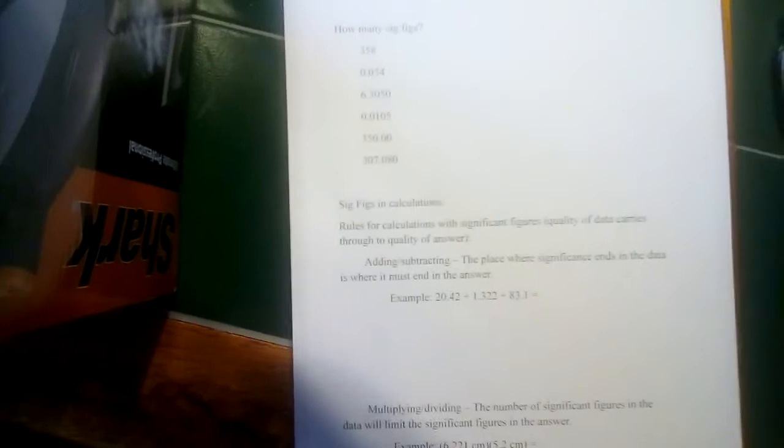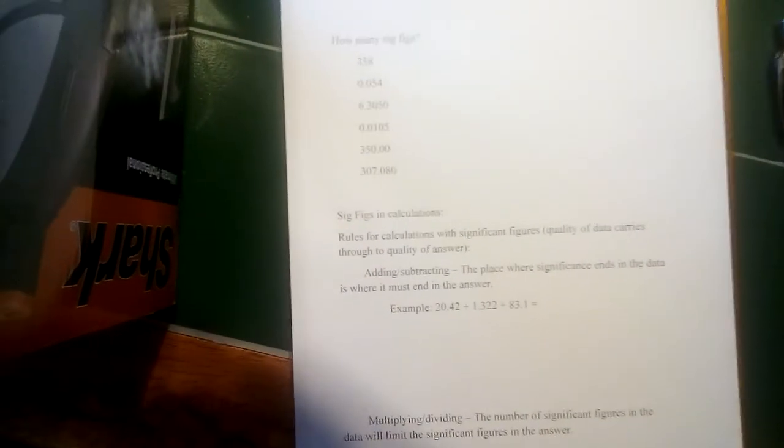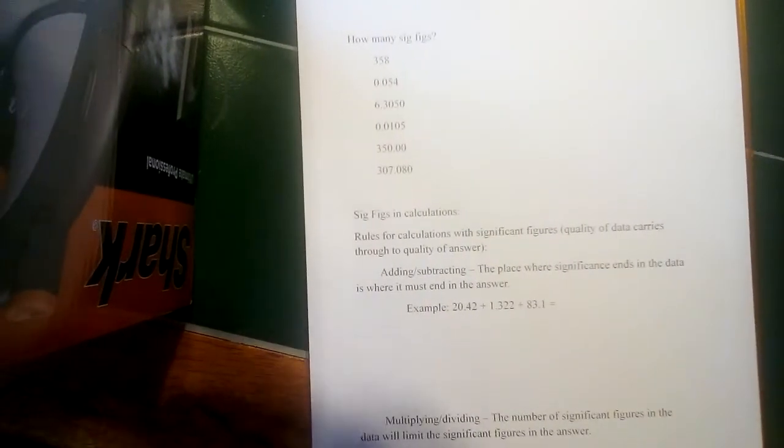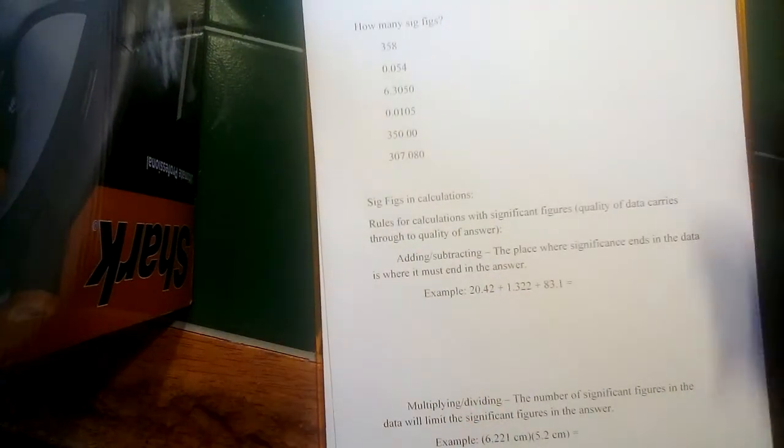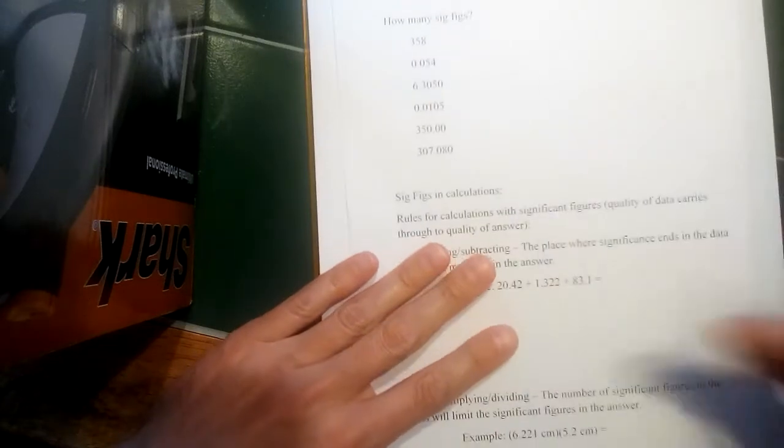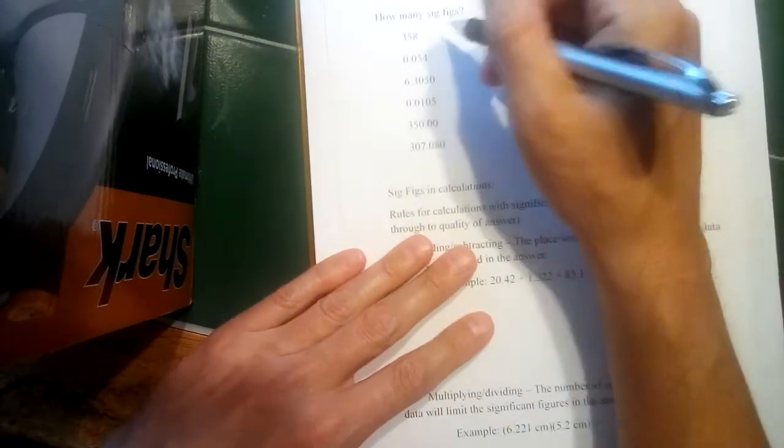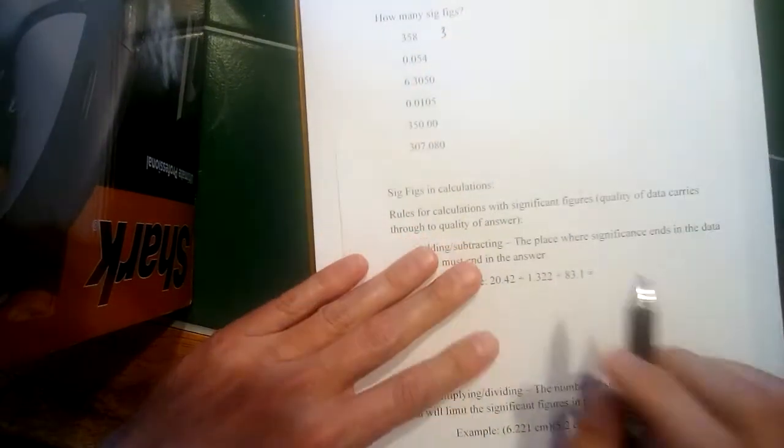All right, so now that we know how to recognize significant figures in a number, we can look at a couple examples. Each of these numbers, we want to think about how significant figures are represented by each of them. So 358, all non-zero, that would be three significant figures.